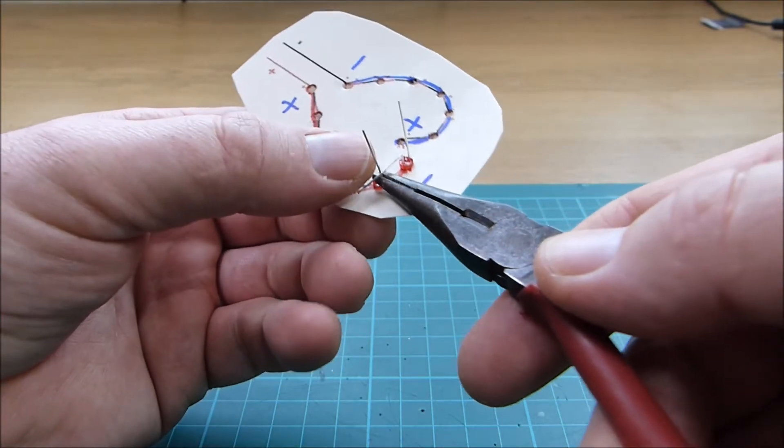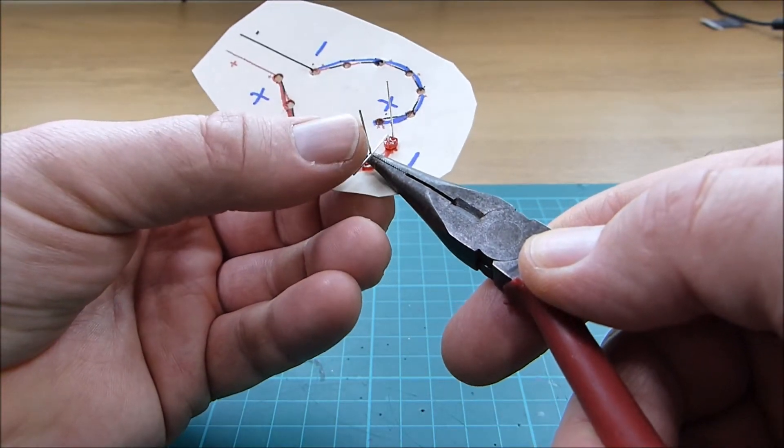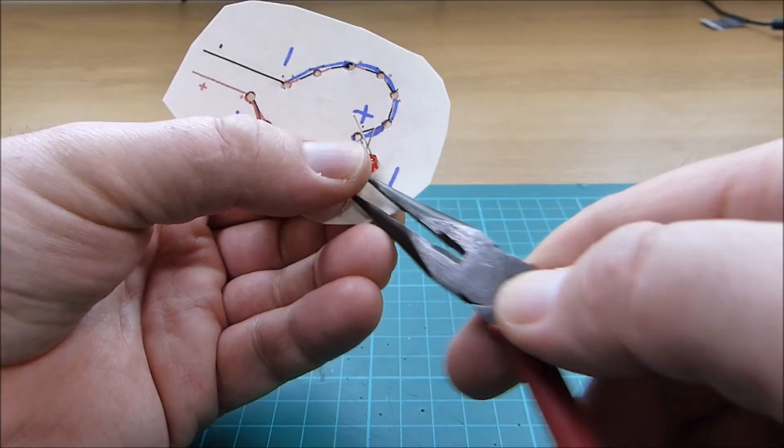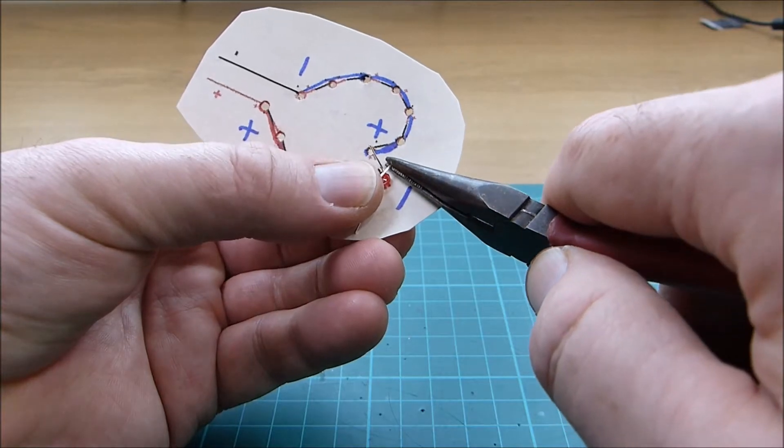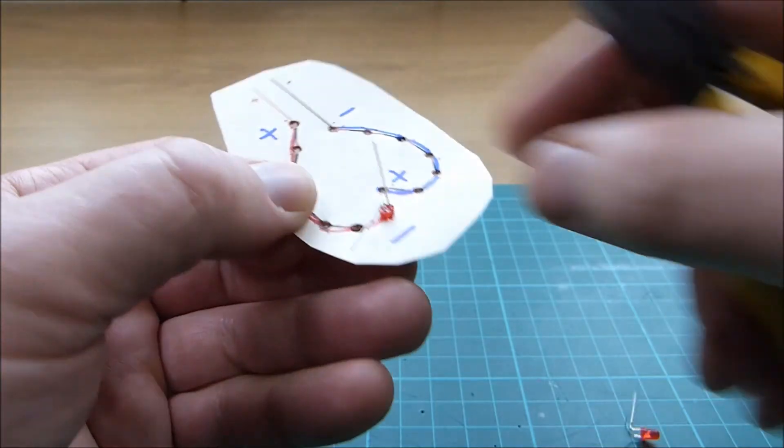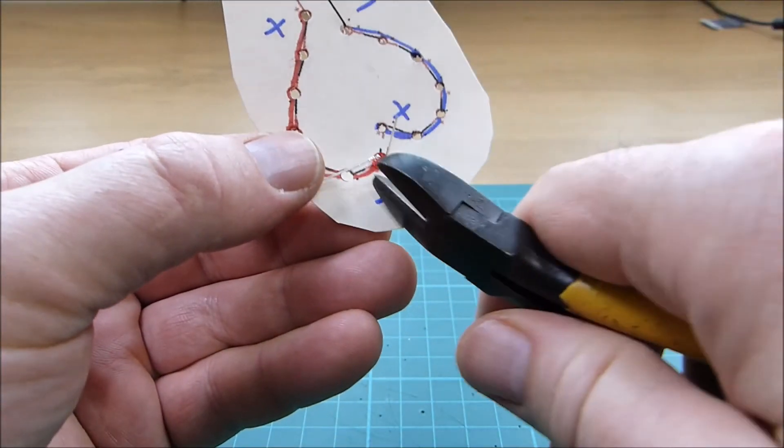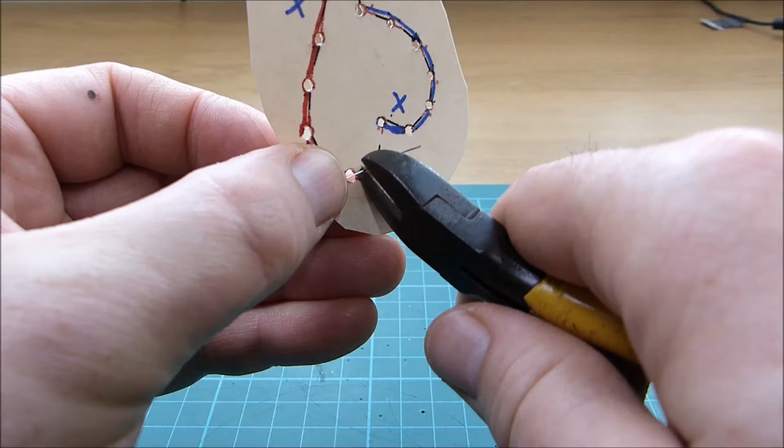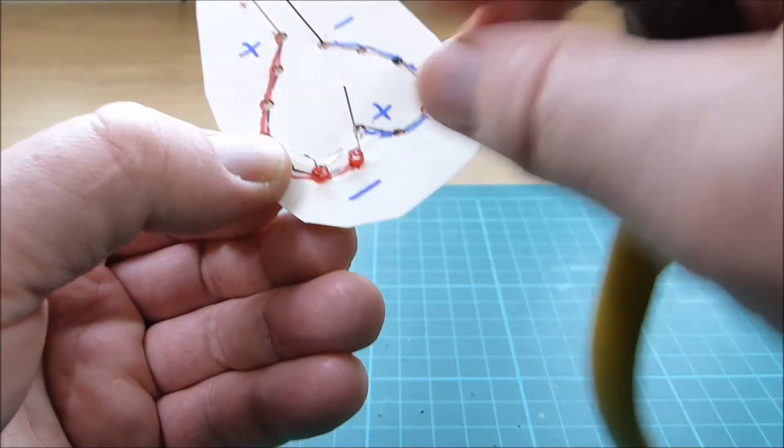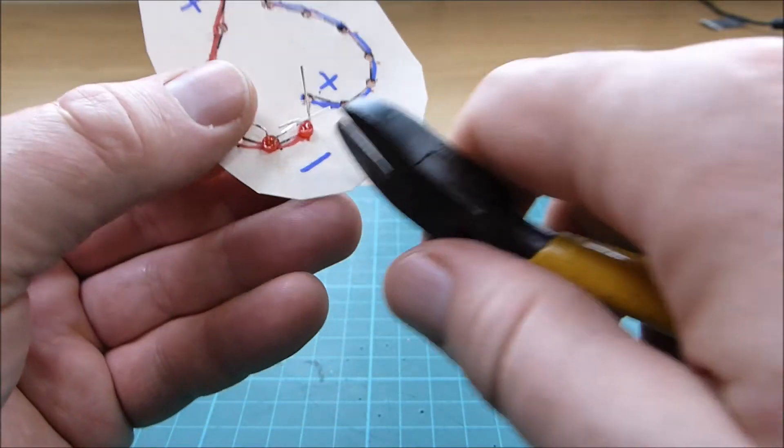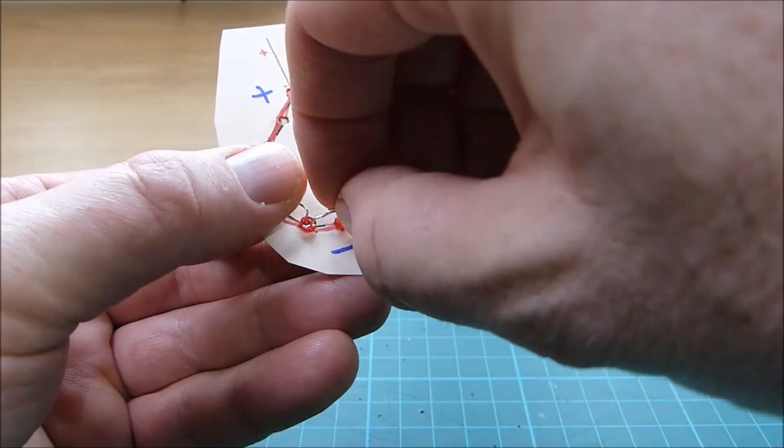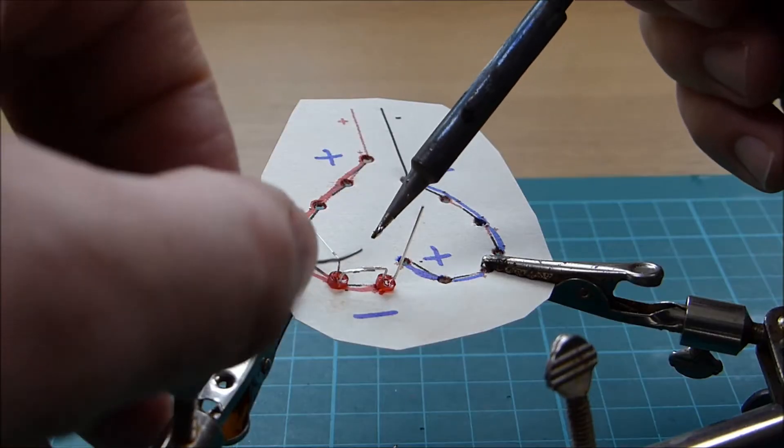Now bend over the short lead on the second LED to meet the long lead on the first LED. Now trim the lead lengths ready for soldering, and then solder the two leads together.